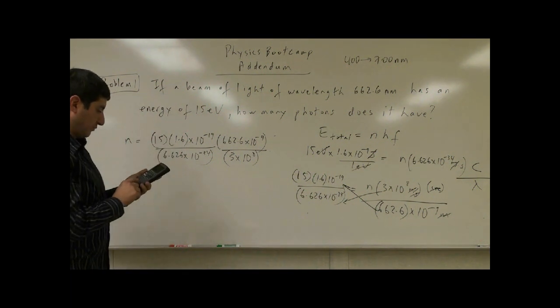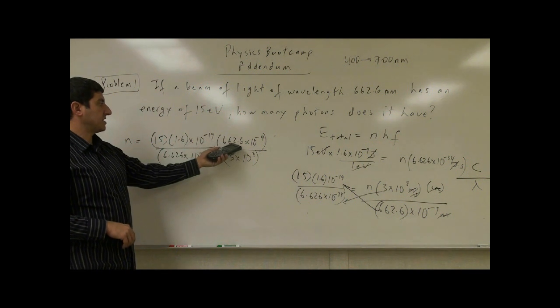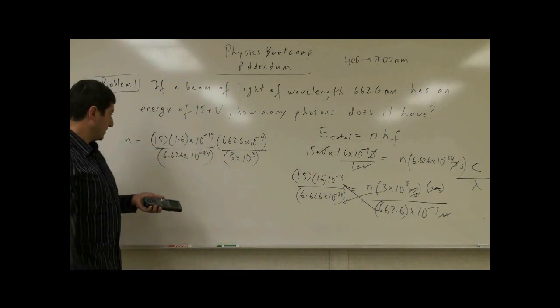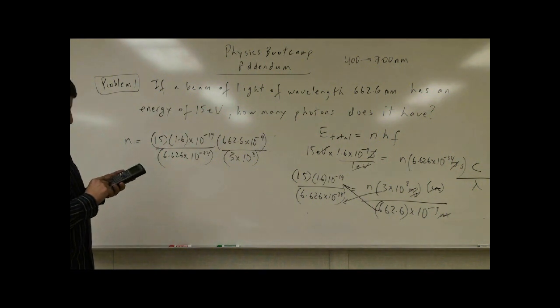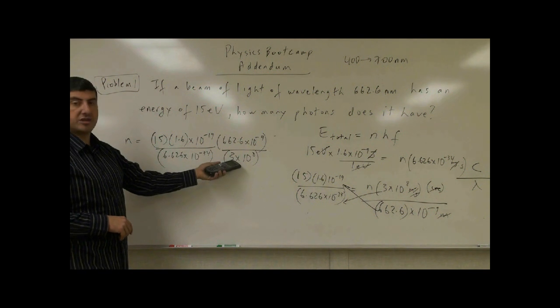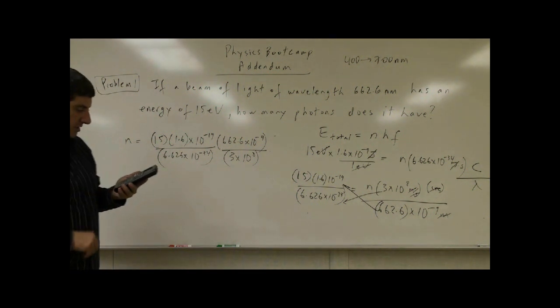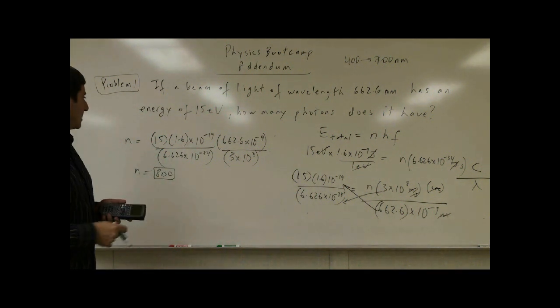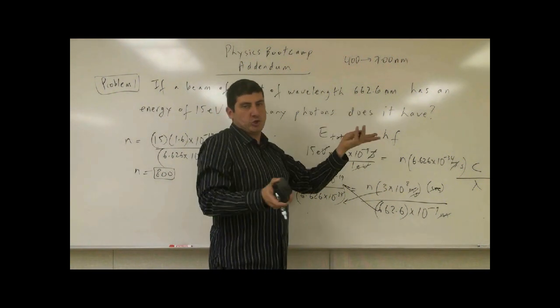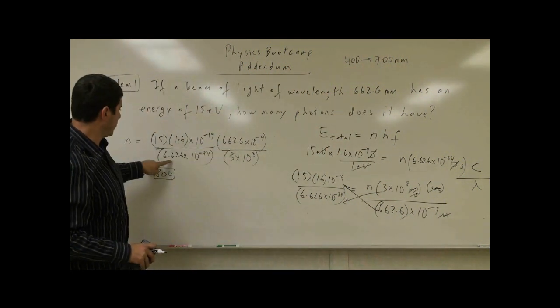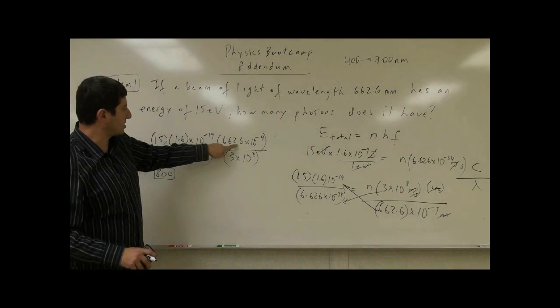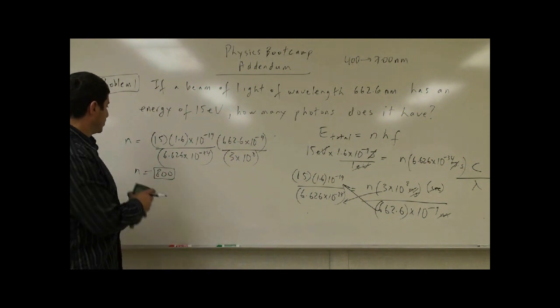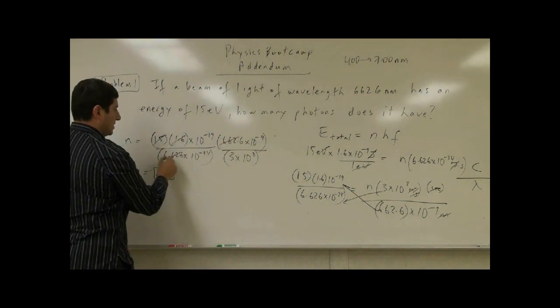So 15 times 1.6, that gives you 24, times 662.6, that gives you 15902. You divide that by 6.626, and you also divide that by 3. Right now, I'm just doing the numbers. Divide that by 3, you get 800. Well, what happened here, you got a whole number. Why? Because this wavelength was purposely given to you so that it happens to be actually a multiple of Planck's constant. You see, 6.626, 662.6. So, when you divided this, it's going to end up perfectly cancelling, and you get a nice number. So, this one takes care of this.